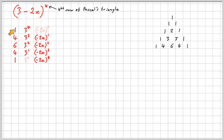And then your final answer is just the sum of each of these rows as products. So 1 times 3 to the power of 4 times 1 is just 3 to the power of 4, which is 81. And the next term, we've got 4 times 27 times negative 2x. Then we've got 6 times 9 times minus 2 times minus 2, which is going to be positive 216 x squared.